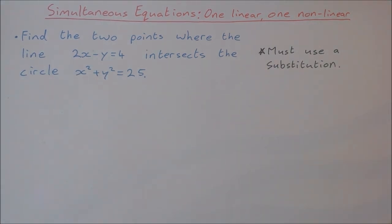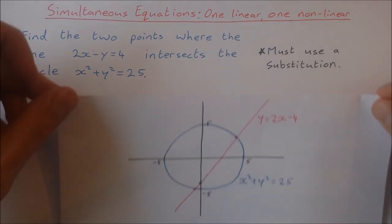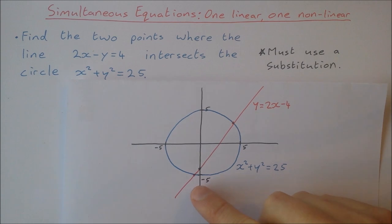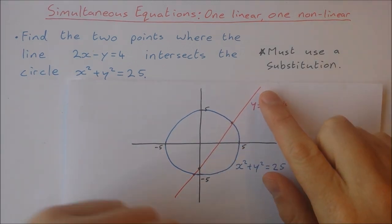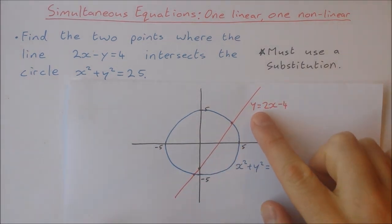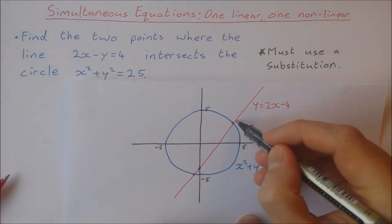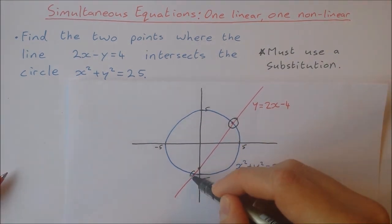Before I show you how to do it, I'm just going to show you a diagram of what these two equations look like. The line is here, 2x minus y equals 4, written in the form of y equals mx plus c. The circle x squared plus y squared equals 25 is a circle with center (0,0) and radius 5. We're looking for these two points here and here.